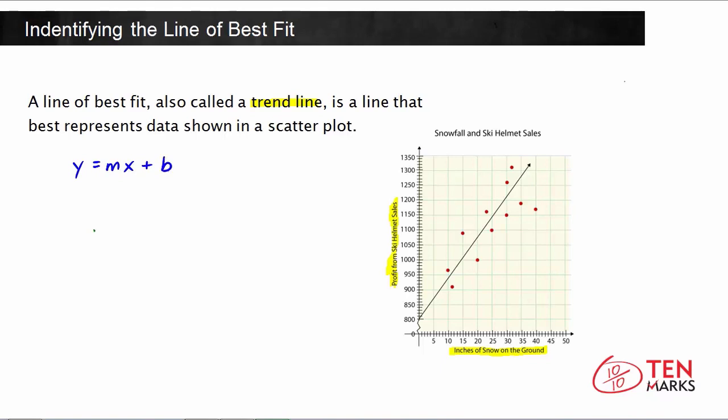You have the slope-intercept form of a line as y = mx + b, and what we're going to do is start by finding the slope, which is m. Now, m is found by finding the difference in two y values over the difference in two x values.